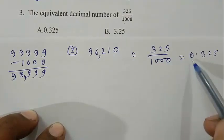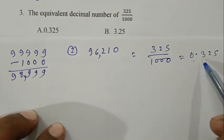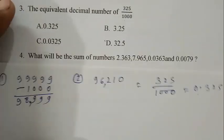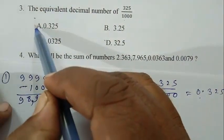0.325. 1, 2, 3 places. So 0.325. A is the right answer.